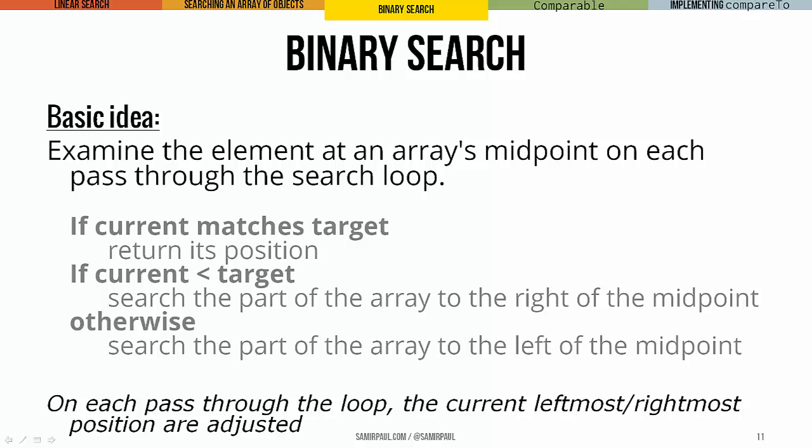The basic idea is just to examine the element at an array's midpoint on every pass through the search loop. And if the current element that we're looking at matches the target that we're looking for, we return that position. Now, if the current element is less than the target, we're going to take the part of the array to the right of the midpoint, which contains the positions of the greater elements. Otherwise, we're going to search the part of the array to the left of the midpoint, which has all the positions that have items that are less. And on each pass through the loop, the leftmost or the rightmost position gets adjusted so that we can track which portion of the array we're actually looking at.